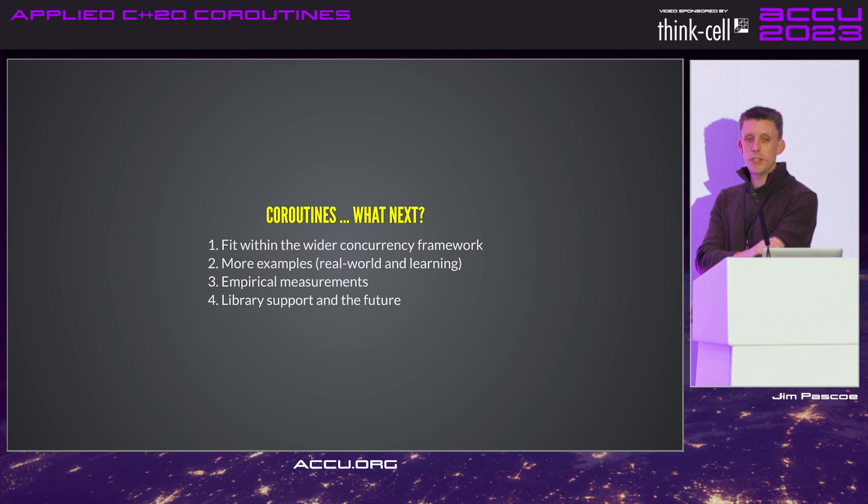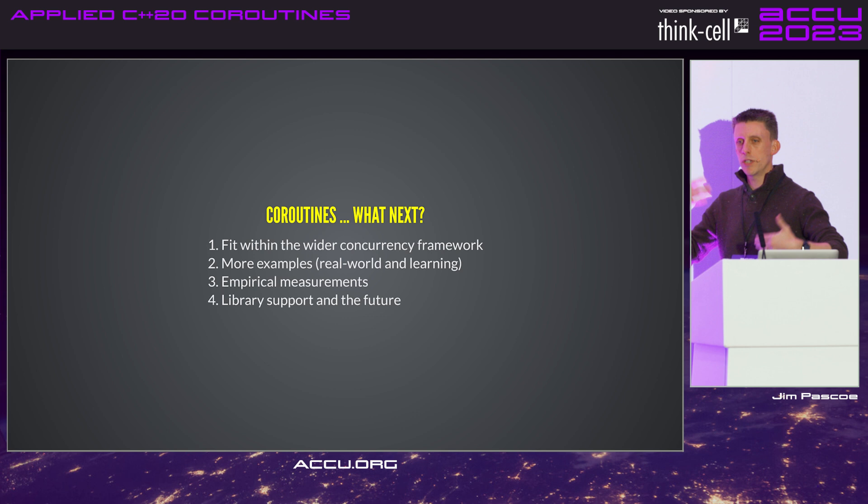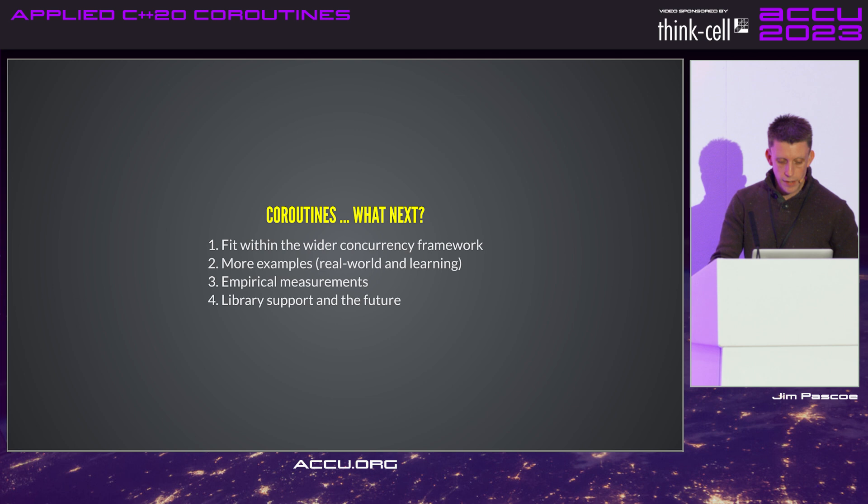We're going to look at a bit of empirical measurement. And as everybody mentioned — Deepmar, Martin, library support, HALO — what is the future? Where are coroutines going? What's coming in C++23, C++26, and beyond?